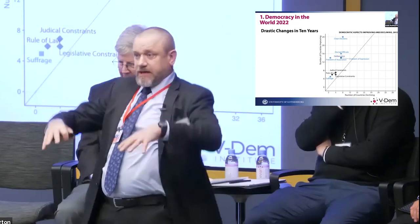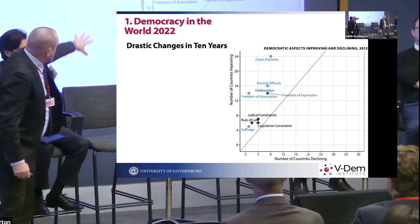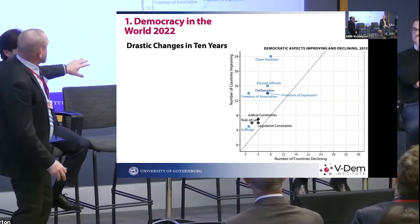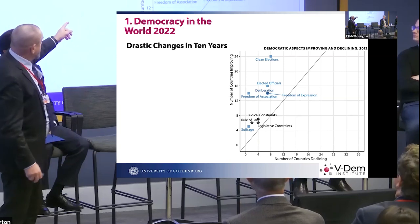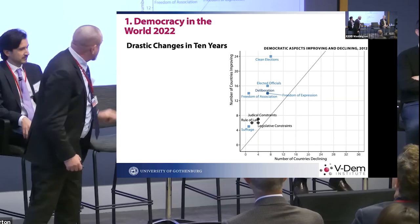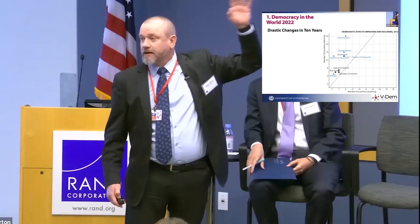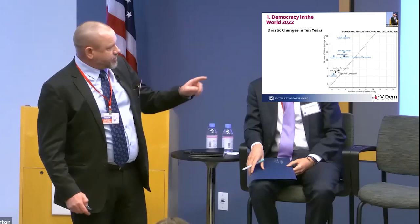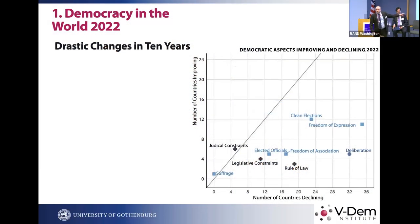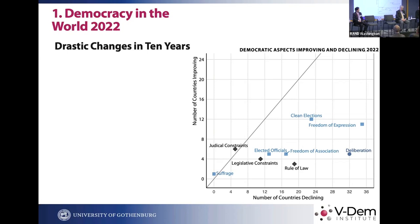Looking at different components of democracy: ten years ago, by 2012, clean elections had improved in 24 countries and declined in eight. If you're above the line, things are getting better in more countries than they are getting worse. Compare this to 2022 — they're all below the line. Worst of all is freedom of expression, including media freedom, declining in 35 countries over the past ten years.